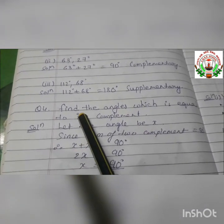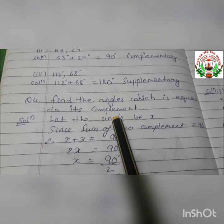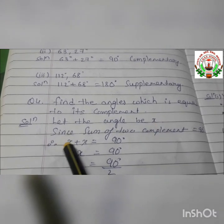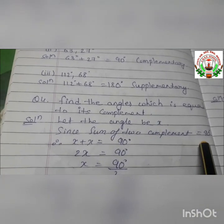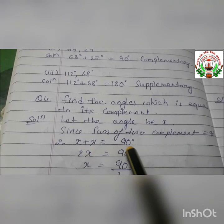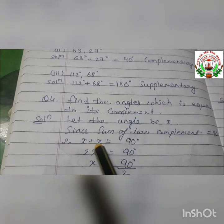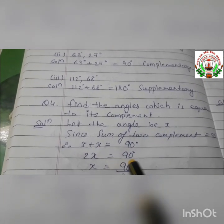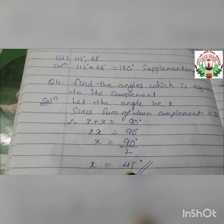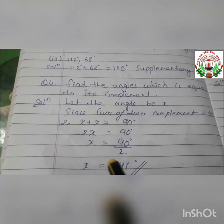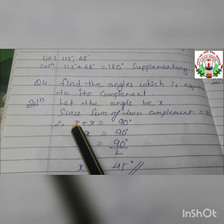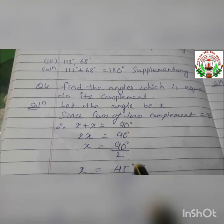Question number 4: find the angle which is equal to its complement. Let the complementary angle be X. Since the sum of the two complementary angles is 90 degrees, and both angles are X, we have X plus X equals 90 degrees. So 2X equals 90 degrees, meaning X equals 45 degrees. To verify: 45 plus 45 equals 90 degrees, so our solution is correct.